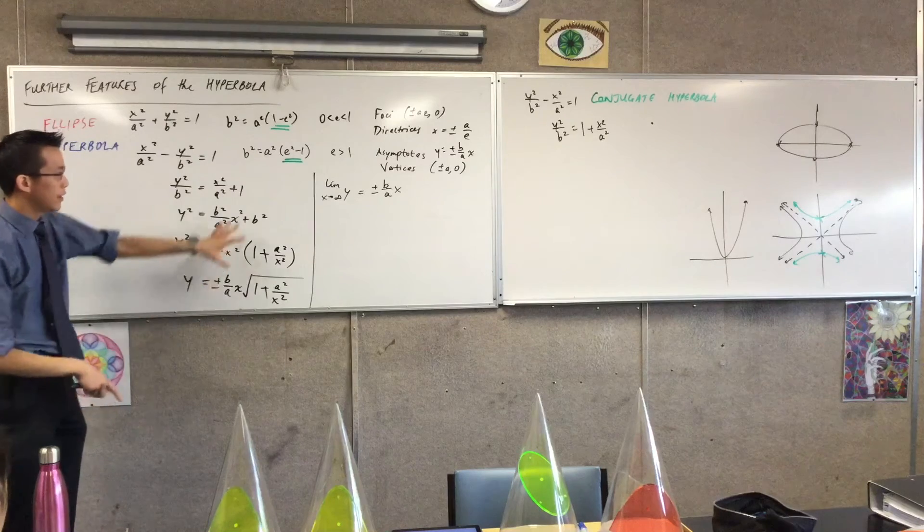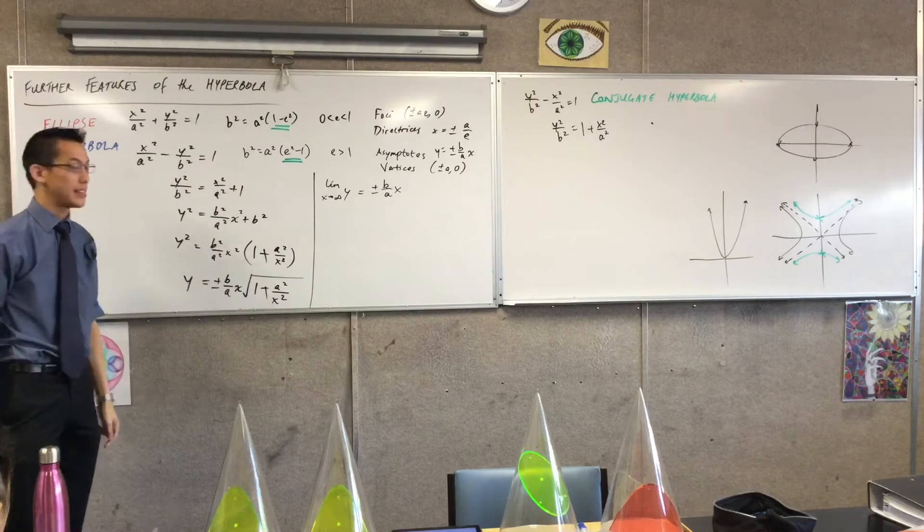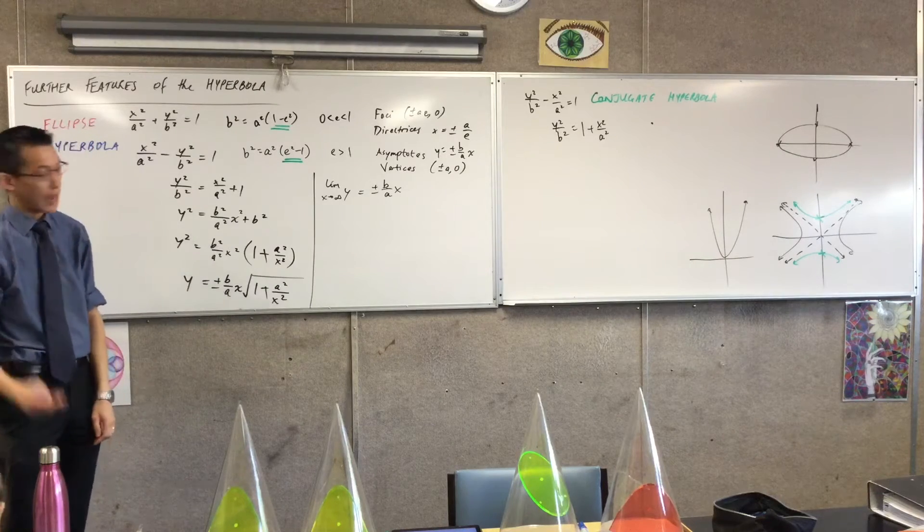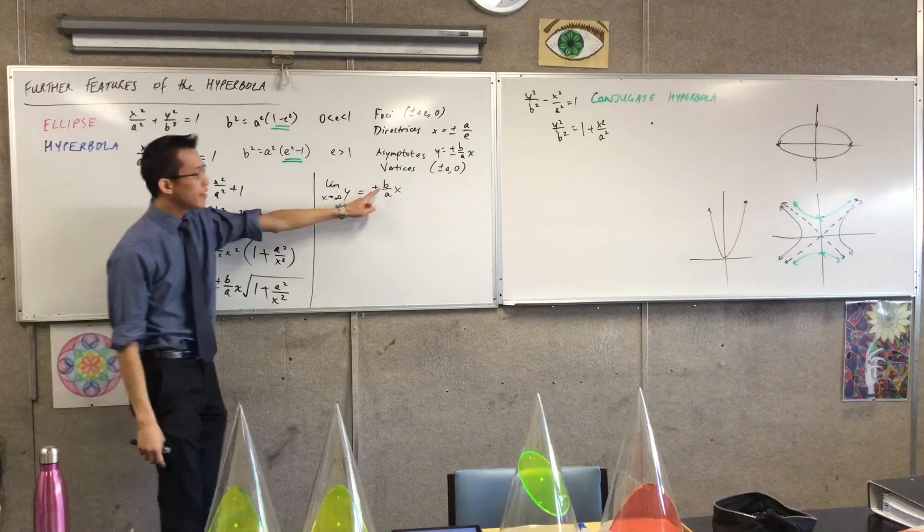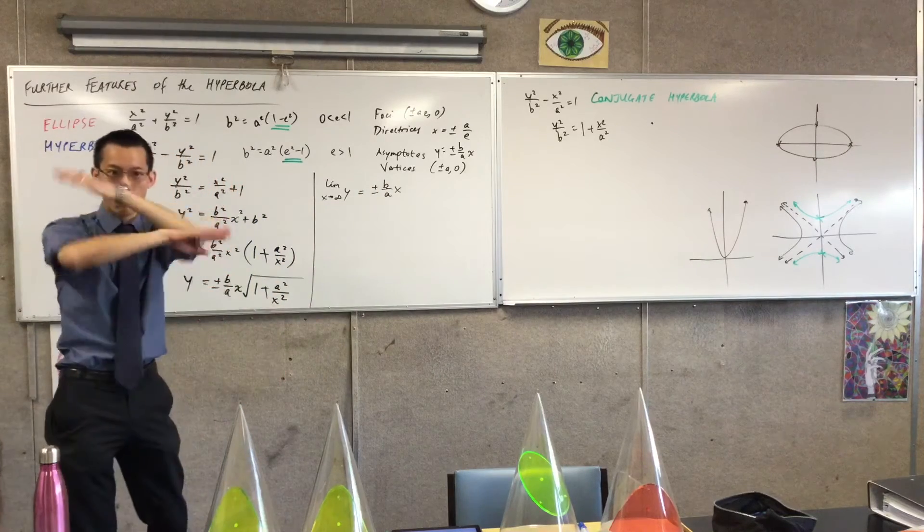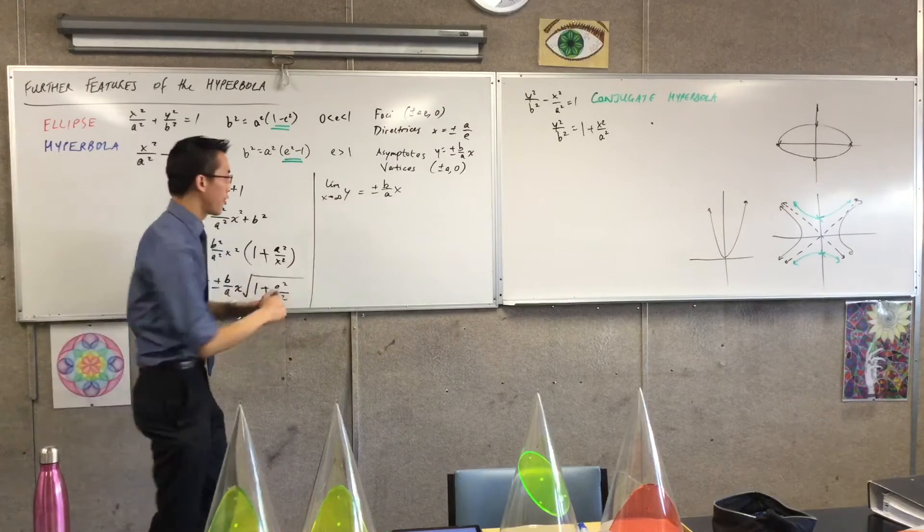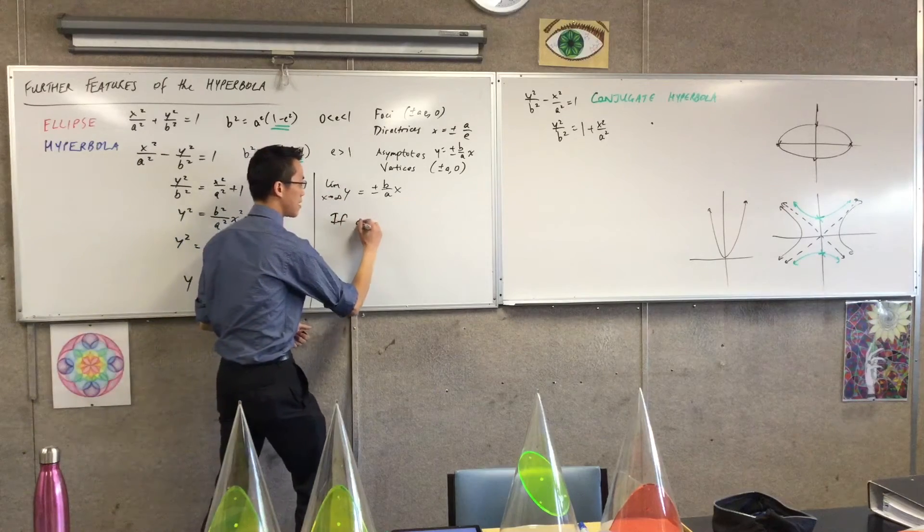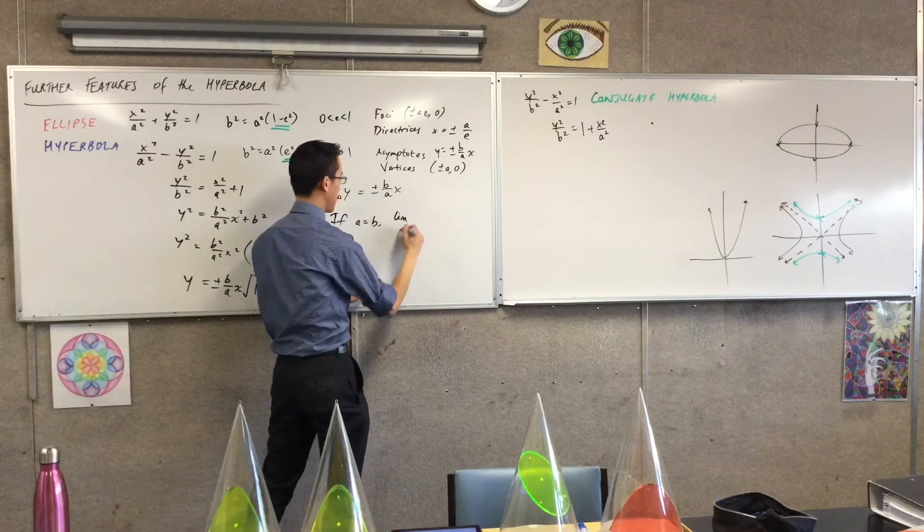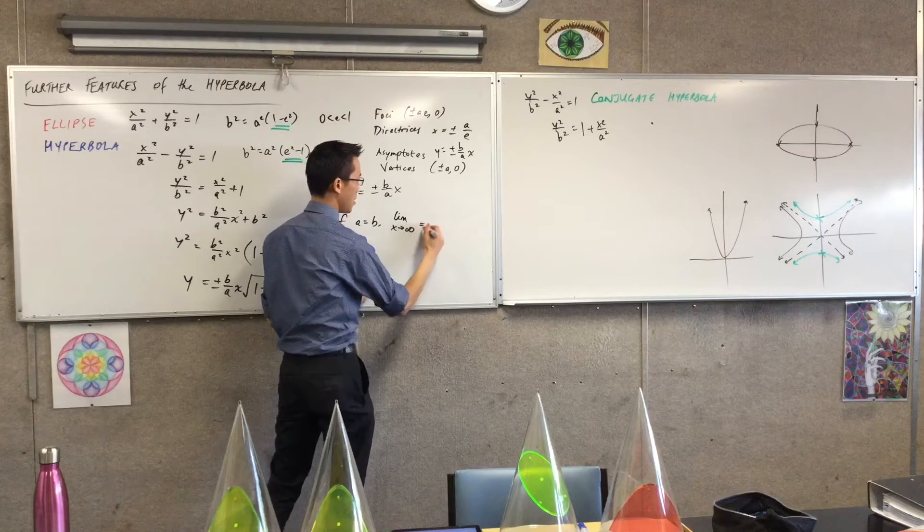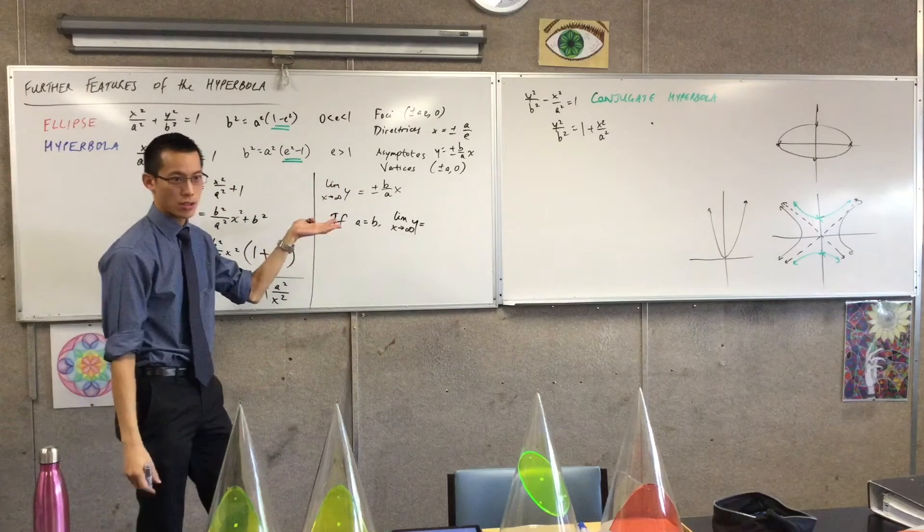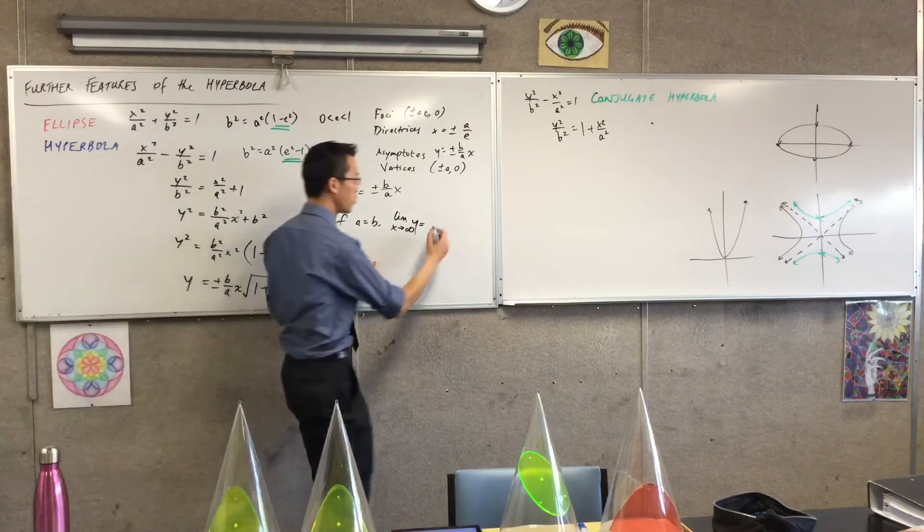Now, one last thing before we leave all of this stuff and particularly figure out these asymptotes and why they're useful. Do you notice there's a special case for the asymptotes? If these two numbers, a and b, if they are equal to each other, they're not just off at random angles. If a equals b, the limiting behavior is a very special case of one. When a equals b, that fraction, b over a, is just one. So what you get is this.